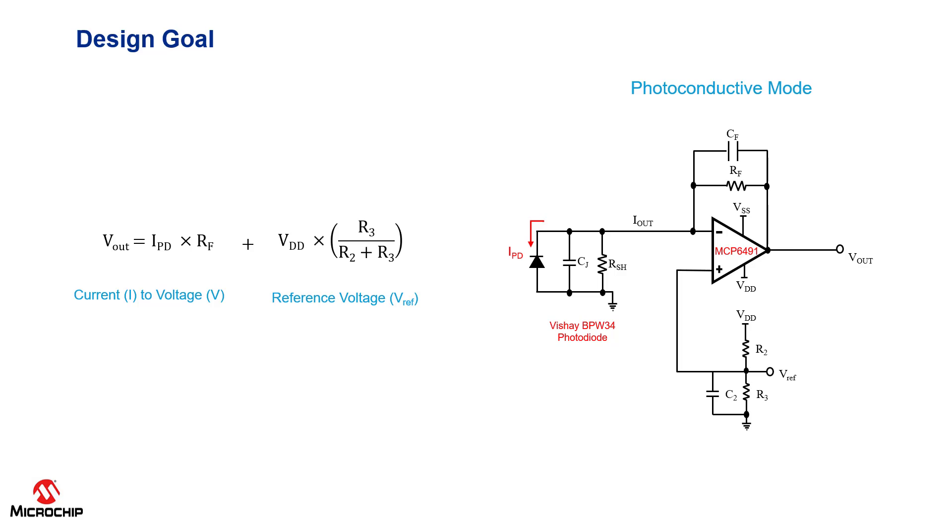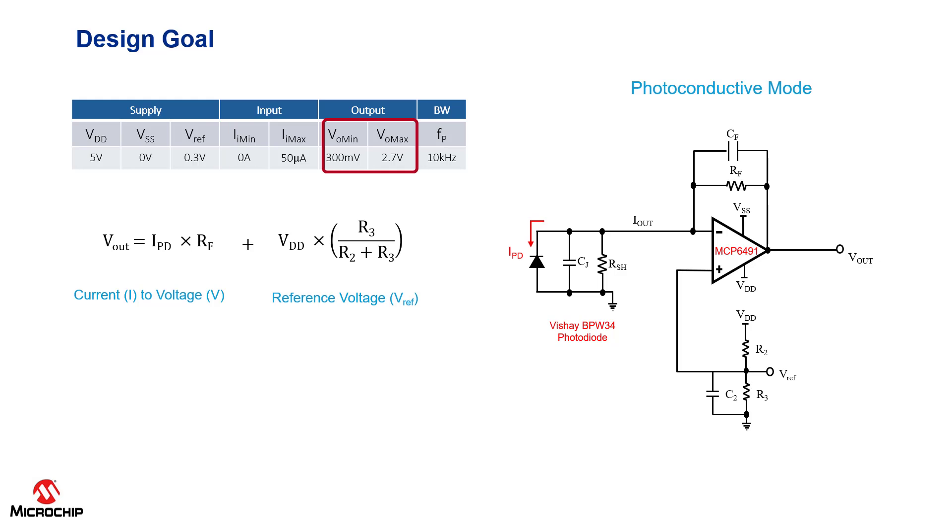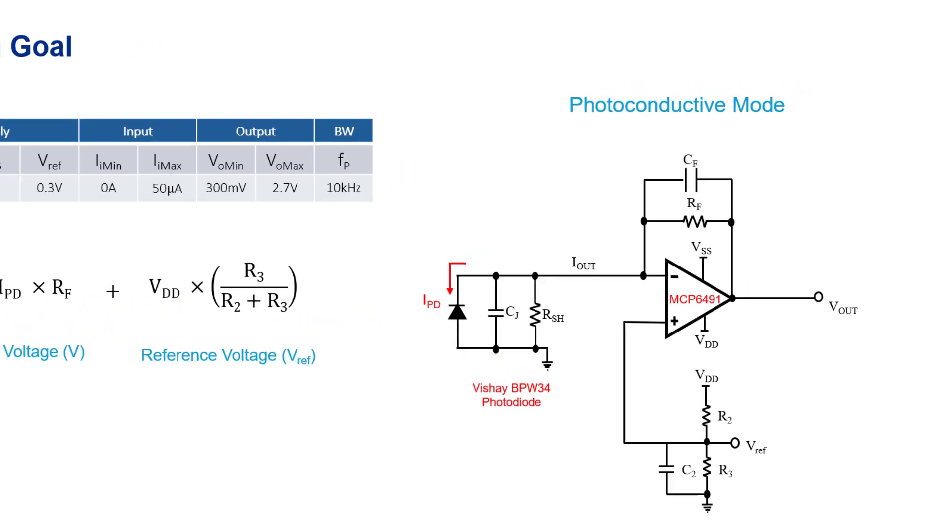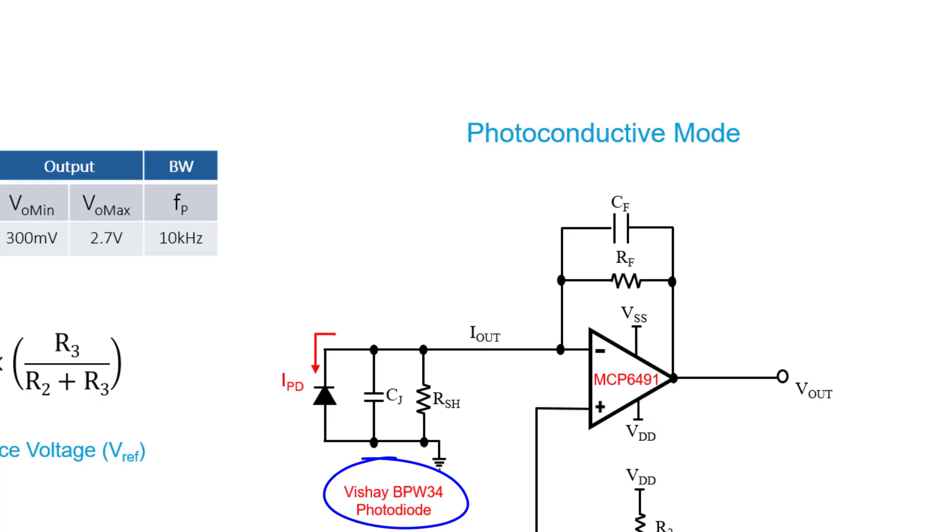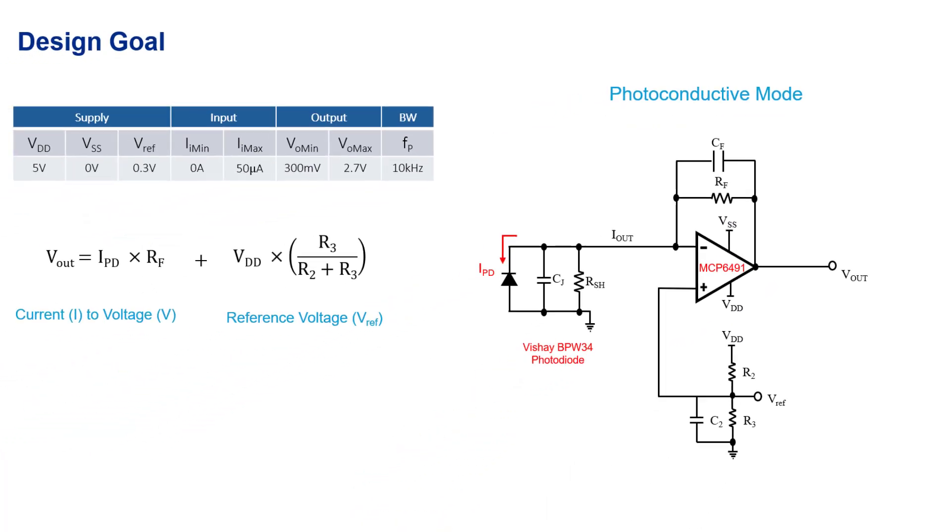The design goal for this circuit is to convert an input current that ranges from 0 to 50 microamps to an output voltage that ranges from 300 millivolts to 2.7 volts. The frequency of the input signal is 10 kilohertz. For this design, we're going to use Vishay's VPW34 photodiode and Microchip's MCP6491 op-amp.